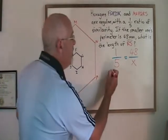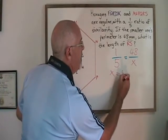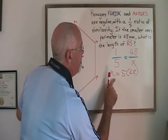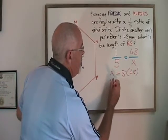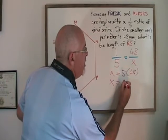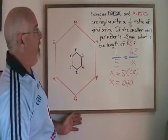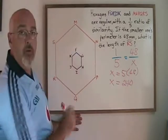Cross multiplying, I get x equals 5 times 48, which is 240. That is the perimeter of the larger orange hexagon.